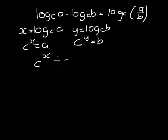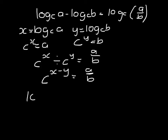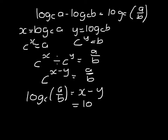c to the power x divided by c to the power y has to be a divided by b. That's c to the power x minus y equals a over b. Writing it as a log: log to base c of a over b has to equal x minus y, and x was log to base c of a, and y was log to base c of b.